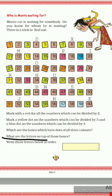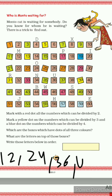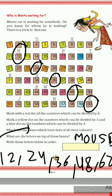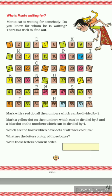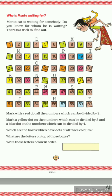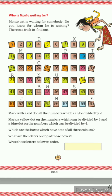What are the letters on top of these boxes? Above 12 is 'M', above 24 is 'O', above 36 is 'U', above 48 is 'S', and above 60 is 'E'. So the letters spell M-O-U-S-E — MOUSE! So Monto the cat is waiting for the mouse. Monto is very clever and was waiting for the mouse.